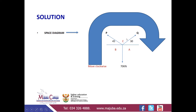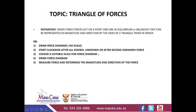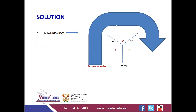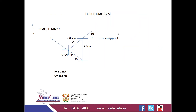We need to determine where to place point A by checking the directions and moving clockwise. The second unknown force is identified, and moving clockwise we label A, B, and C accordingly — where A-B is the known force and B-C and C-A are the unknown forces P and Q.